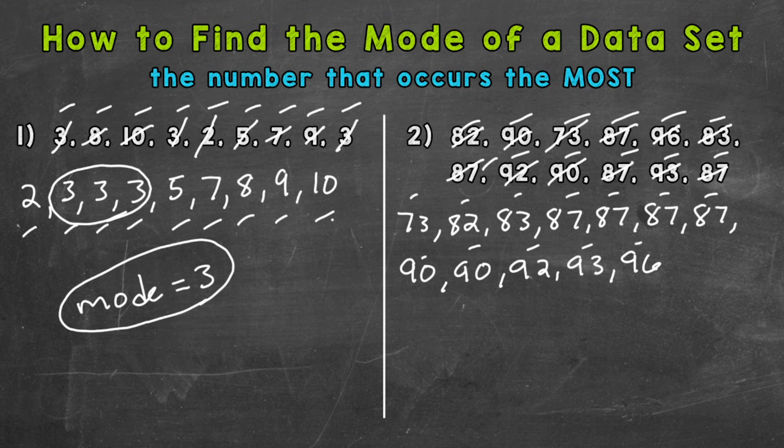Now we need to find which number occurs the most. It looks like this 87 - we have four 87s. So our mode equals 87.